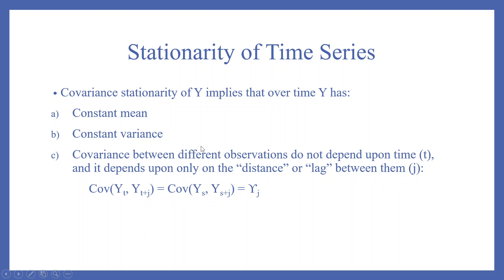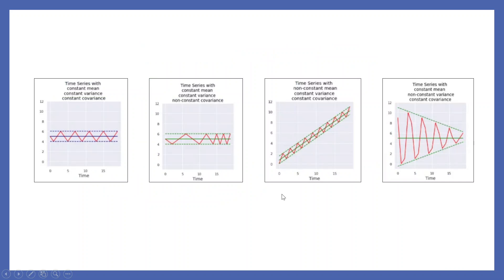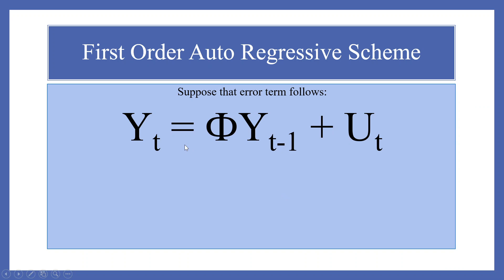So what we require for stationarity is: mean should be constant, variance should be constant, as well as covariance should also be constant. Let's proceed further.